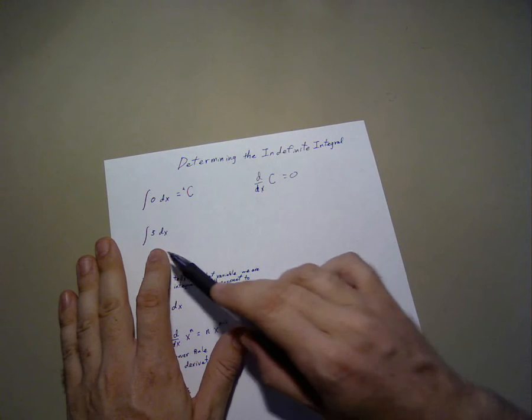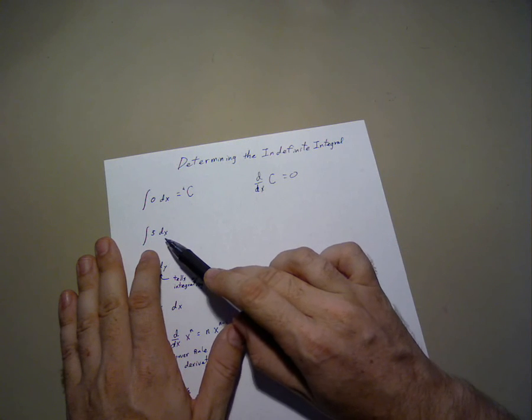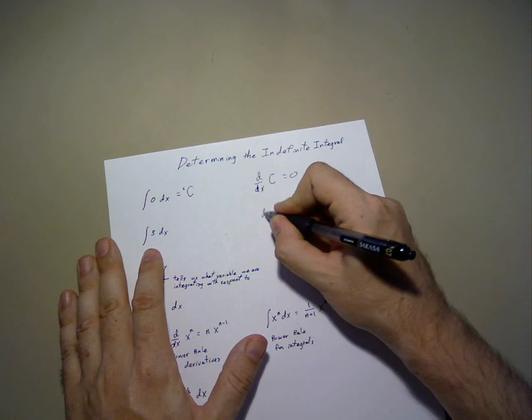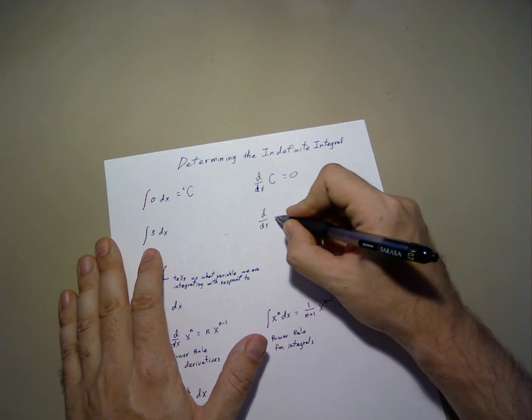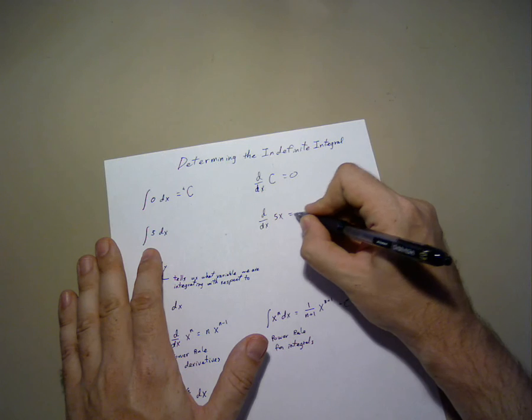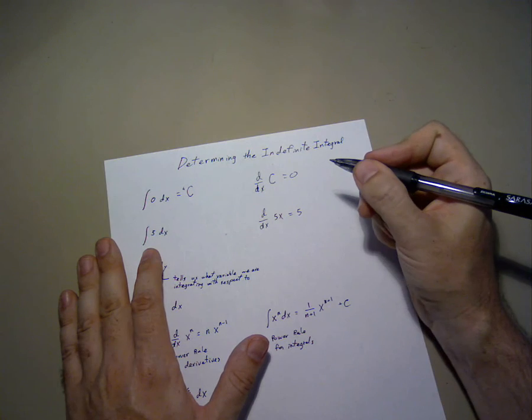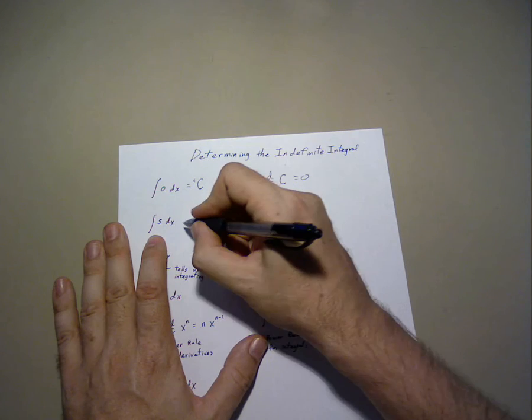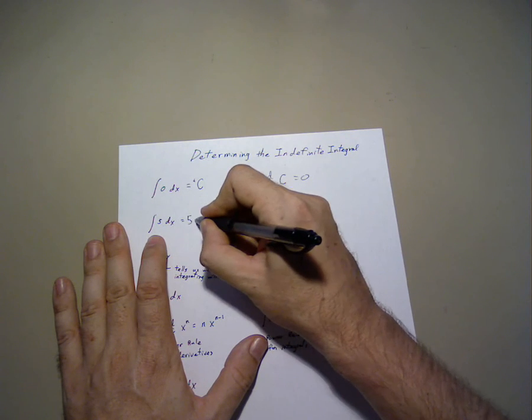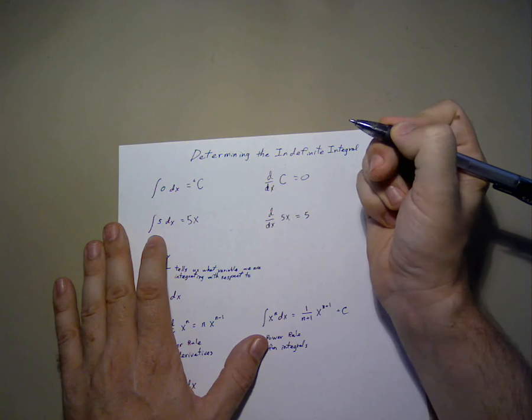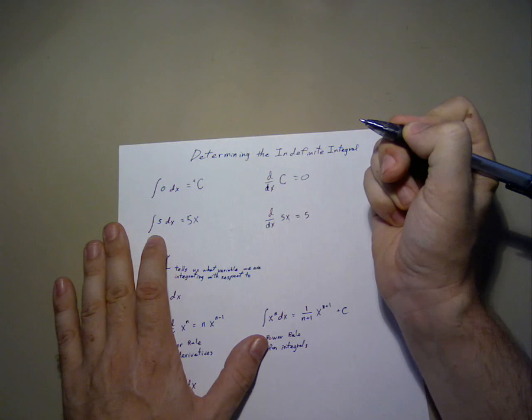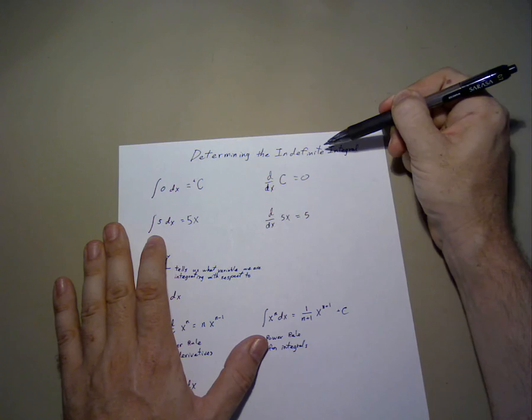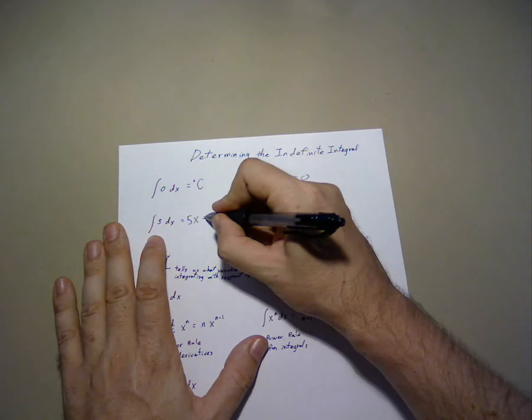Moving on, the integral of 5. Well, if we recall, the derivative of 5x equals 5. Therefore, we can say that the integral of 5 dx is 5x. This is quite true. However, whenever we do an indefinite integral, we need to remember to add plus c.